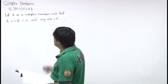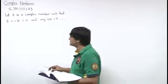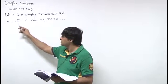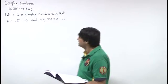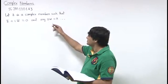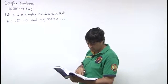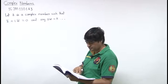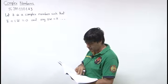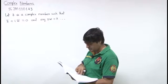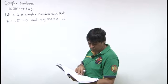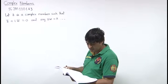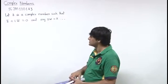In this question, we are given that z is a complex number such that z bar plus iota w bar equals 0, and argument of z into w equals pi. We are further given that the real part is negative and the principal argument is a pi upon b. Then we have to find the value of a plus b, where a and b are co-prime natural numbers.